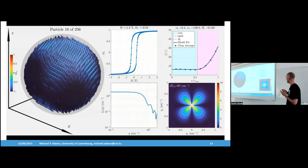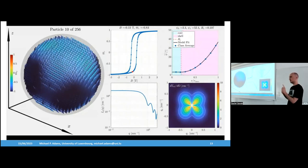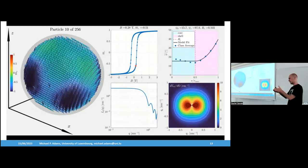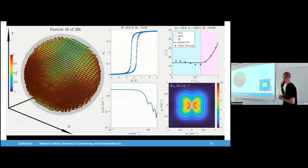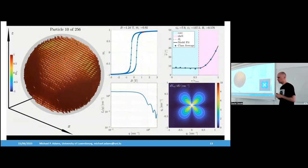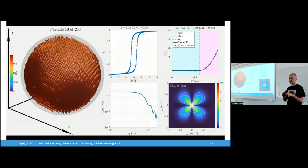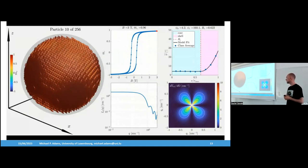Looking at slices of the particle, we can distinguish between the core — shown in cyan — where there are not many spin deviations from the average magnetization, and the surface, where we see more spin deviations. This is also how it is currently done in simpler analytical models to fit scattering data from nanoparticles: you take a ferromagnetic core and say there is a shell where the magnetization is reduced, and often this already fits the data quite well.